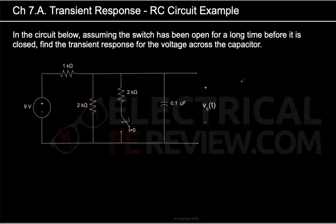Welcome to electricalfereview.com. In today's video we're going to talk about transient response — specifically we're going to work through an example in an RC circuit. An RC circuit is made of resistors and capacitors. We have three resistors and one capacitor, and we're asked to find an expression for the transient response for the voltage across the capacitor, Vc(t).